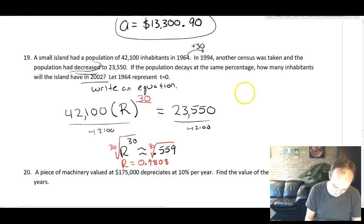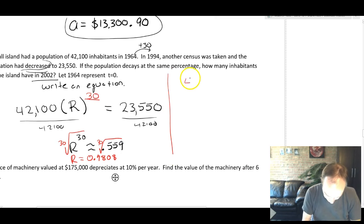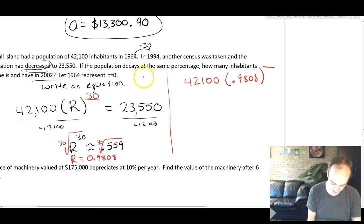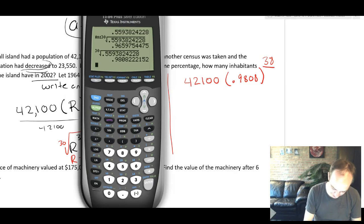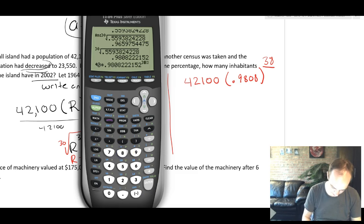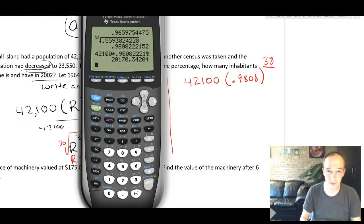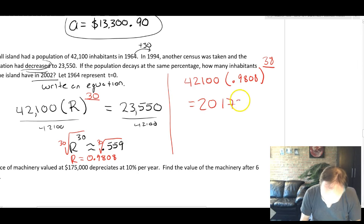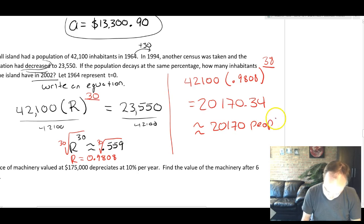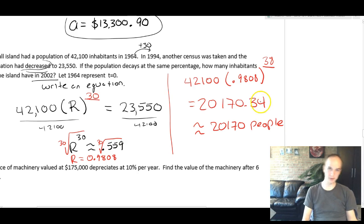Now, if we want to know how many inhabitants there will be in 2002, we got to do another step. We actually, we should write the equation. So it's going to be 42,100 times 0.9808. And I need to know how many years it's been from 1964 to 2002. Well, it was 30 years here. That's 1994. And this is eight more years. So this is going to be 38 total years. And let's just punch that in the calculator. So 42,100 times since I've got it up here, I'm going to use the whole thing, whole decimal there to the 38th. And I get something like 20,170.34 inhabitants, or maybe approximately 20,170 people, since it's not usually common to have 0.34 of an inhabitant on your island.